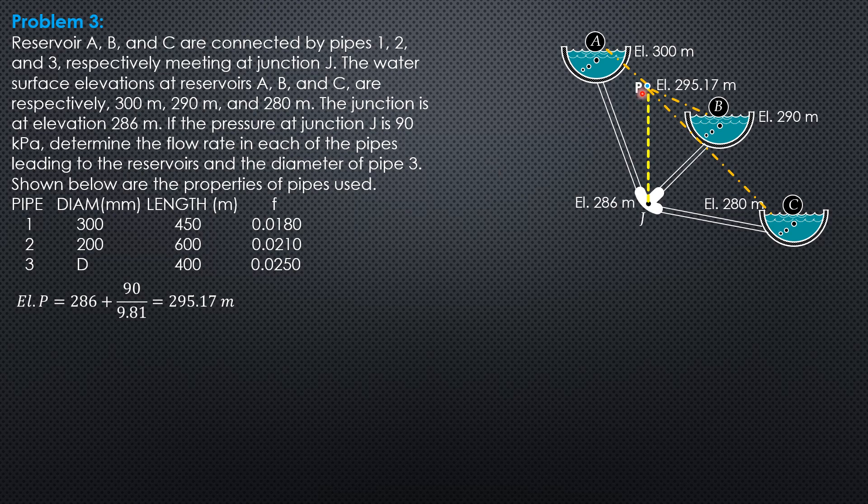Then the flow direction would be because P is below A only, Reservoir A will supply, then Reservoirs B and C receive water. So that's the flow direction.